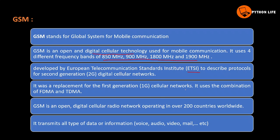GSM uses a combination of FDMA and TDMA - frequency and time division multiple access. GSM is an open digital cellular network operating in over 200 countries, so 200 countries can use GSM.